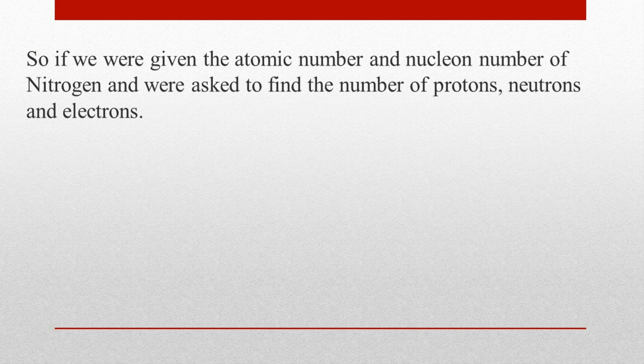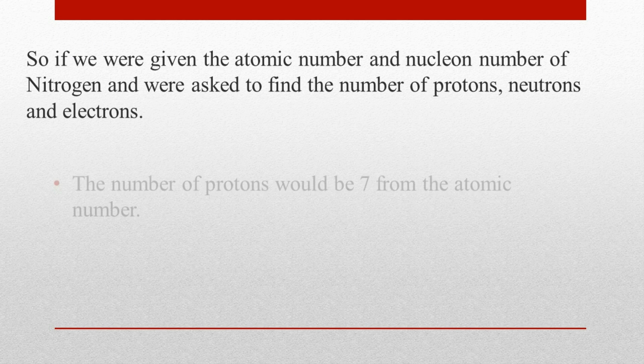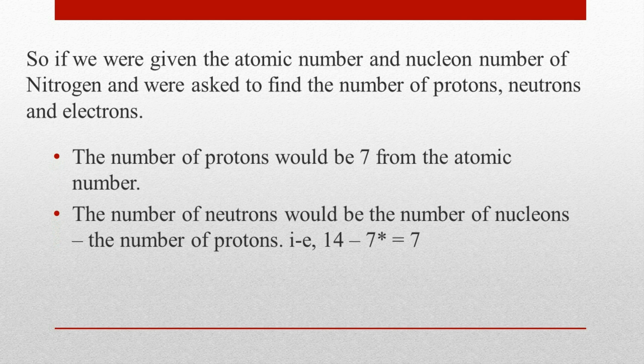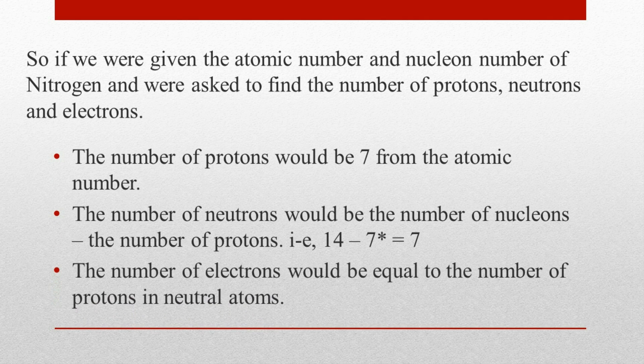So if we were given the atomic number and nucleon number of nitrogen and were asked to find the number of protons, neutrons, and electrons: the number of protons would be 7 from the atomic number; the number of neutrons would be the number of nucleons minus the number of protons, that is 14 minus 7, giving 7; the number of electrons would be equal to the number of protons in neutral atoms, not in ions.